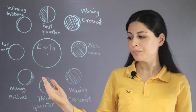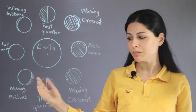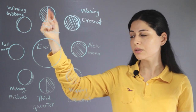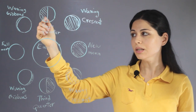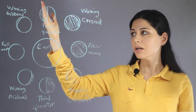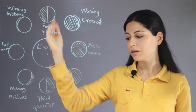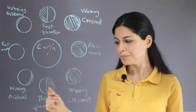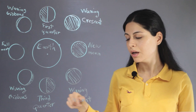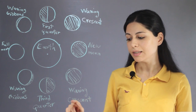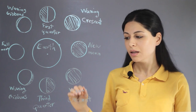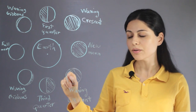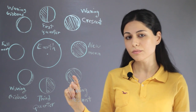The next phase is the third quarter, where the moon is again half bright and half dark. However, the parts that are dark and bright are different from the first quarter — in the first quarter the left-hand side is dark, but in the third quarter the right-hand side is dark.